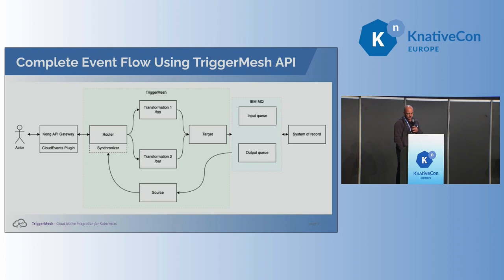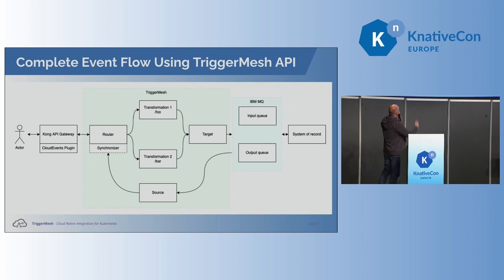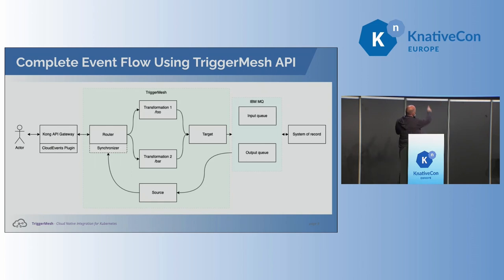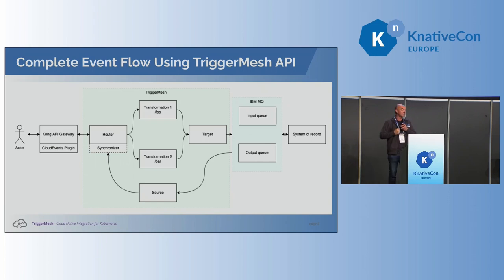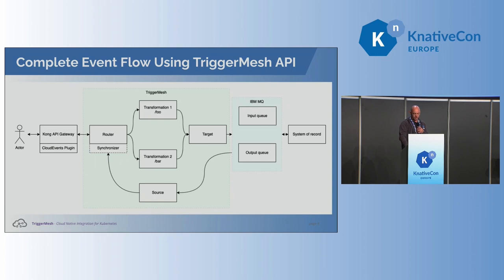Suddenly the full flow looks like this: you talk to Kong — open source or the enterprise product — and you can go fully open source with the Kong API gateway. You use our cloud event plugin, get an event into a Knative router, do routing based on event types, apply different transformations — function-based, however you want to do the transformation. You put into MQ, your mainframe does its job, puts the result back into the output queue, which we read with our source. Then the magic — which is a little bit Frankenstein-ish — is the synchronizer, which waits for an event with a particular ID to make a synchronous reply. So we have an asynchronous flow that we're exposing with a synchronous mechanism.